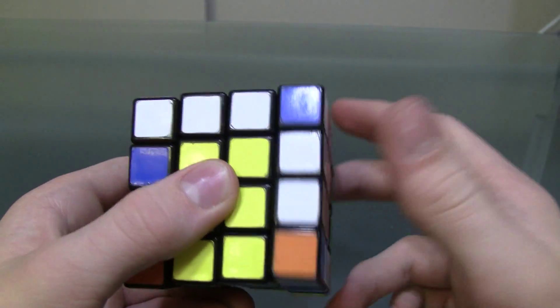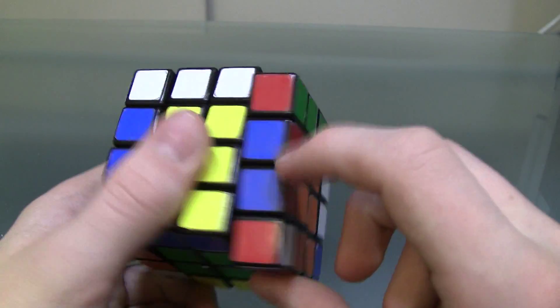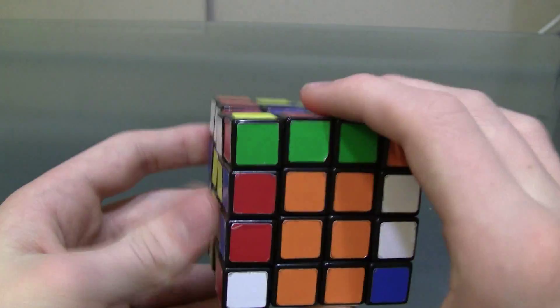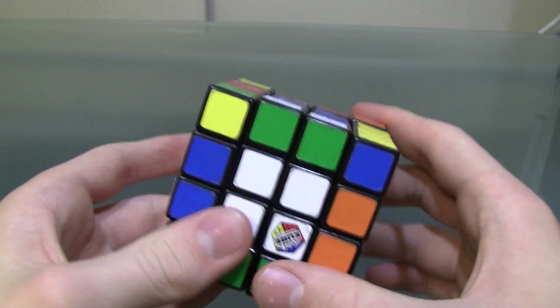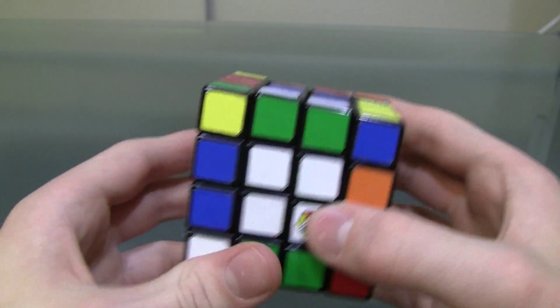So if you only turn the outer layers, it won't mess anything up edge or center-wise. So now we just have to solve this as a 3x3. And it's a little out of proportion, but it's the same concept.